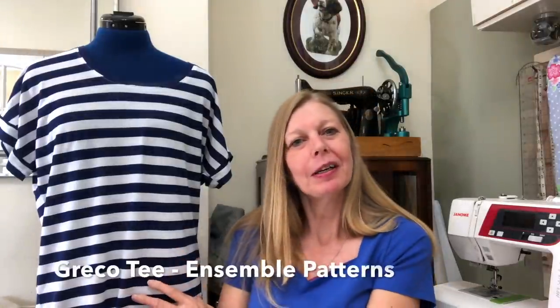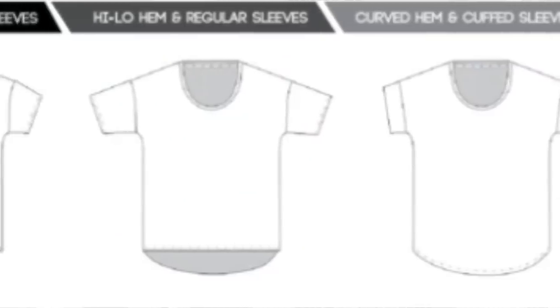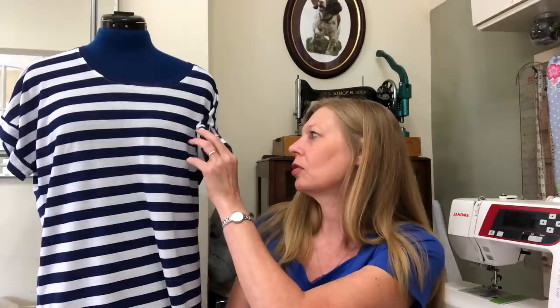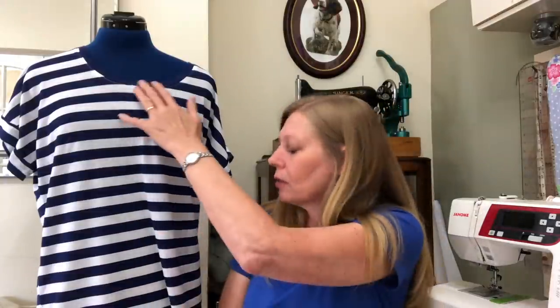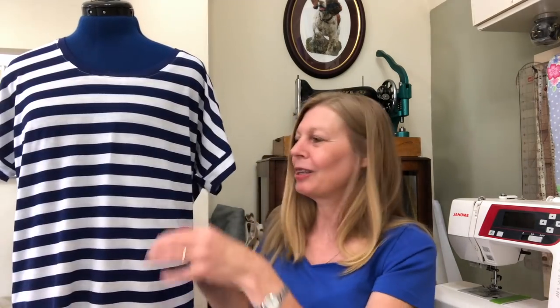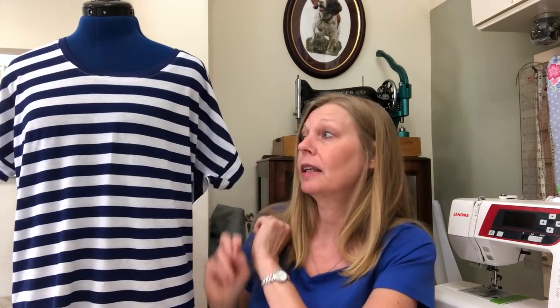Next up is the one that Mandy's wearing — the Greco T by Ensemble Patterns. This is a much looser-fitting t-shirt. You've got three sleeve options and different hem options. The option I went for is a cuff sleeve — you can have a little sleeve or a longer sleeve. There's a band around the neckline, and hem options are regular, high-low, or curved. I've gone for a curved hemline, with more or less a grown-on kimono sleeve with a bit of cuffing at the end.